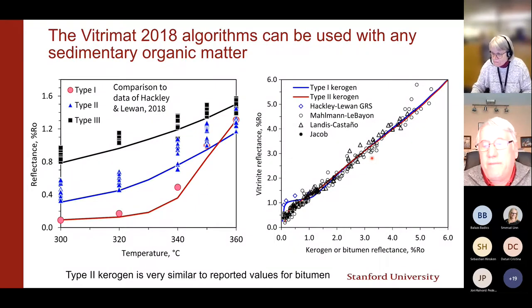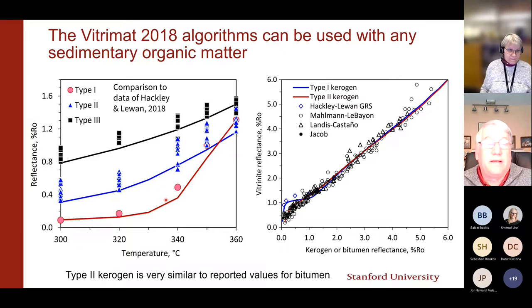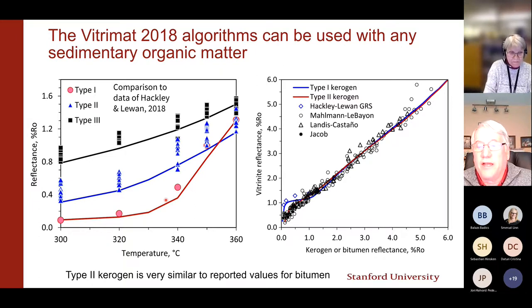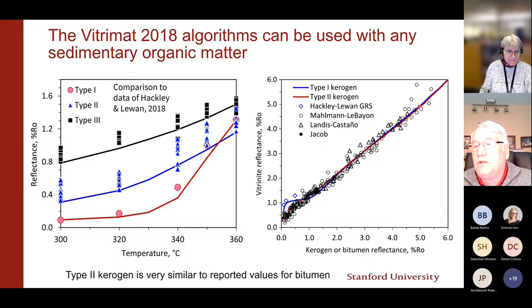To reiterate: the Vitromat 2018 gave parameters for Type 1, Type 2, and Type 3, and here is a comparison to data from Hackley and Lewin 2018 — we had not done this back in the 1980s, but it's fairly straightforward once you have the calibration data. One important thing to point out: the relationship between vitrinite reflectance and bitumen reflectance — you can now calculate this curve for Type 1 and Type 2 kerogen and compare to data from many workers. It all falls along one line. The Type 2 kerogen model works extremely well over the entire range of conditions.